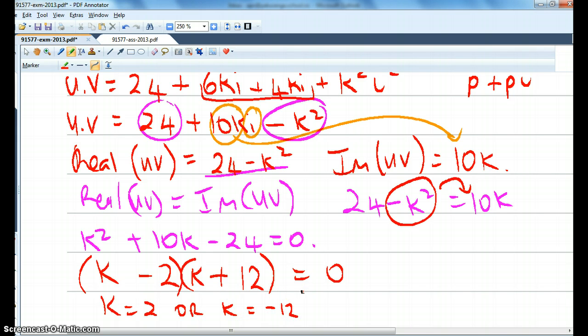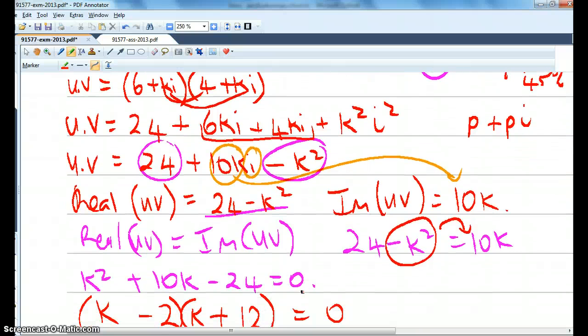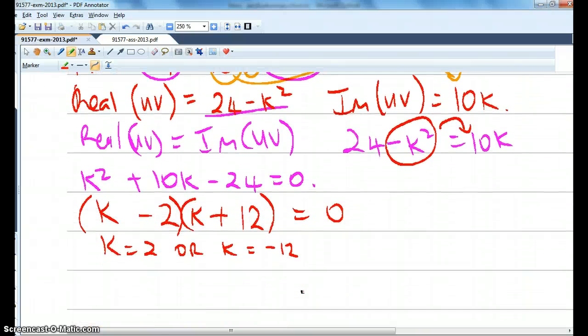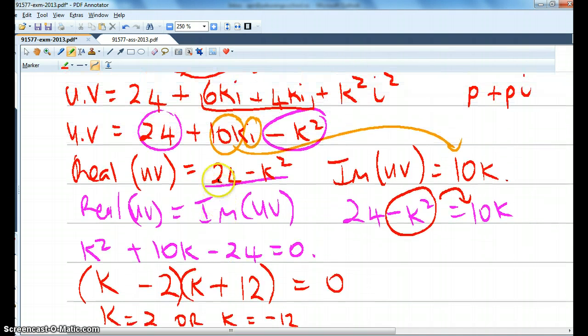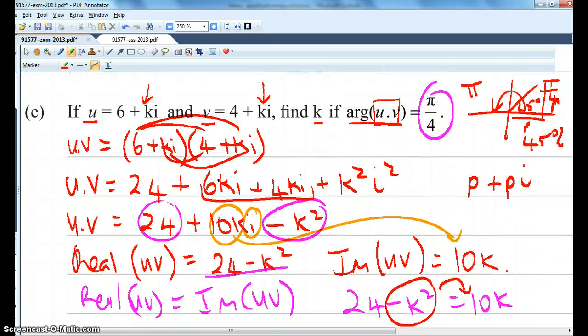Now, we need to go back to the start, because remember this is saying find k. Maybe one of those k values doesn't work. So let's have a look at 6 plus ki and 4 plus ki. Sorry, not that. We're looking at, find the argument is pi upon 4.